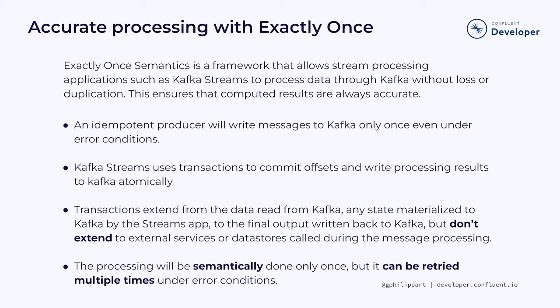The combination of the idempotent producer and the transaction API in Kafka is what makes exactly once possible. An idempotent producer will write messages to Kafka only once, even under error conditions. On the processing side, Kafka Streams uses transactions to commit offsets and write processing results to Kafka atomically, which means that either both fail or both succeed. Transactions extend from the data read from Kafka, any state materialized to Kafka by the Kafka Streams application, to the final output written back to Kafka. They do not extend to external services or data stores called during the message processing.